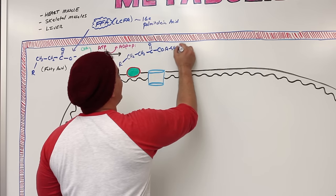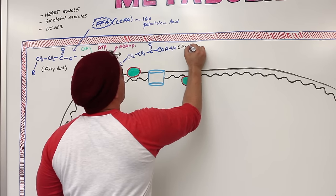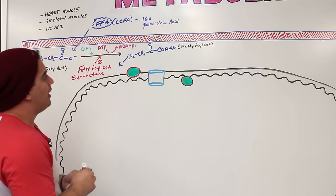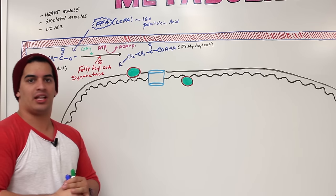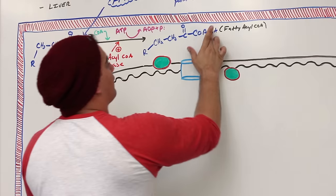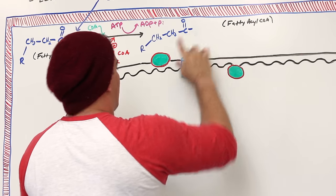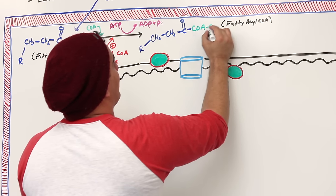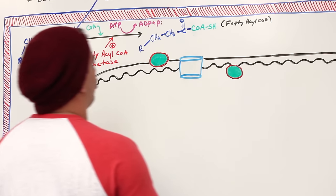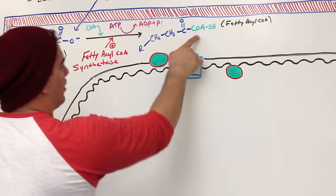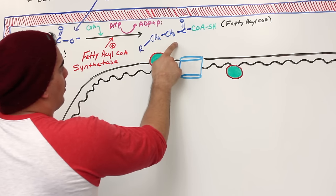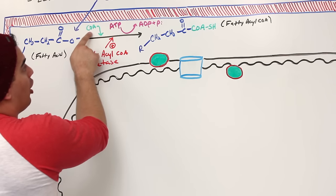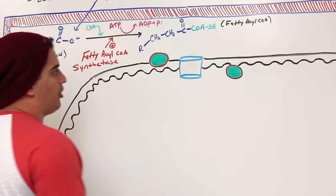This new molecule synthesized in this first step is called a fatty acyl CoA. Now here's the next problem: we put a CoA on it to keep it in the cell, but now we have another problem — we can't get this molecule into the mitochondria because of the CoA.